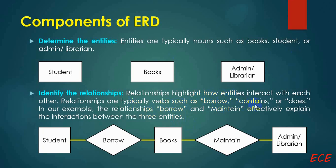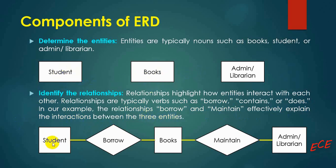Relationships highlight how entities interact with each other. They are typically verbs such as borrow, contains, or manage. In our example, the relationships borrow and maintain effectively show the interaction between the three entities: student, books, and admin. The student actually borrows the books, and the admin or librarian maintains the books — that is how we show this relationship among these three entities.